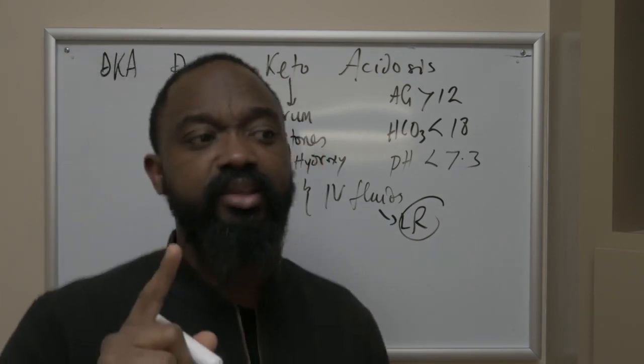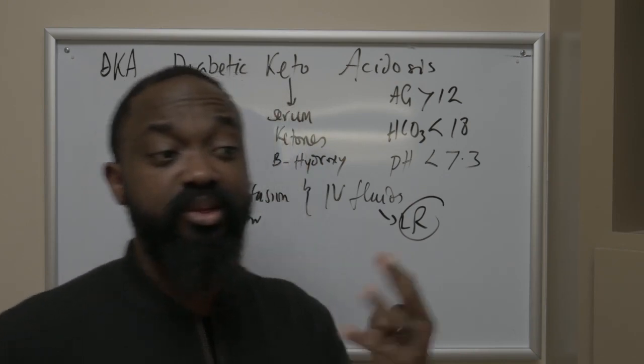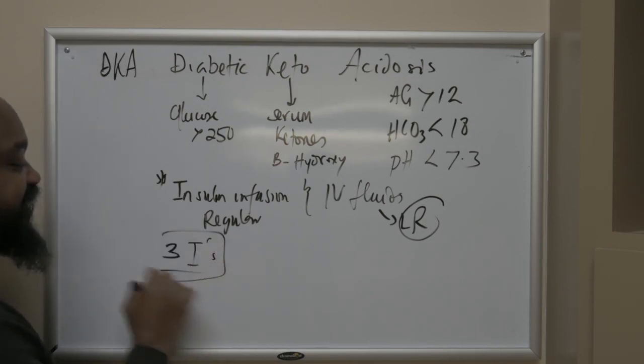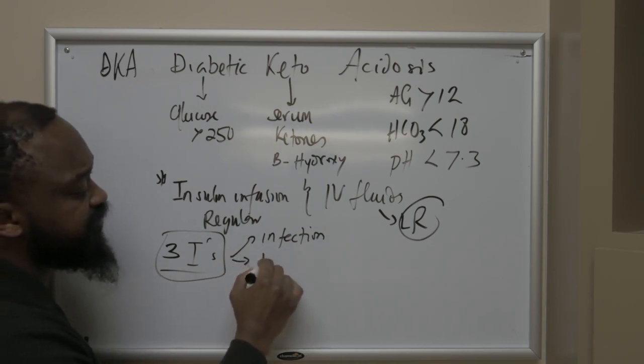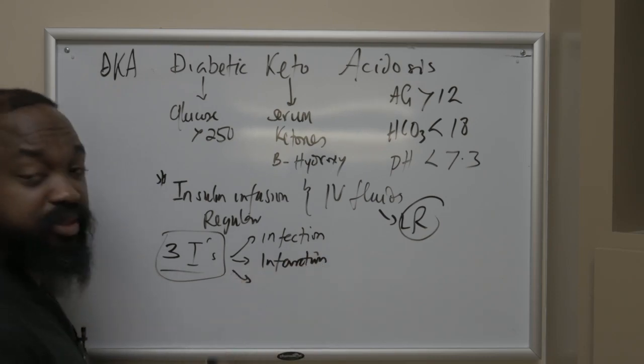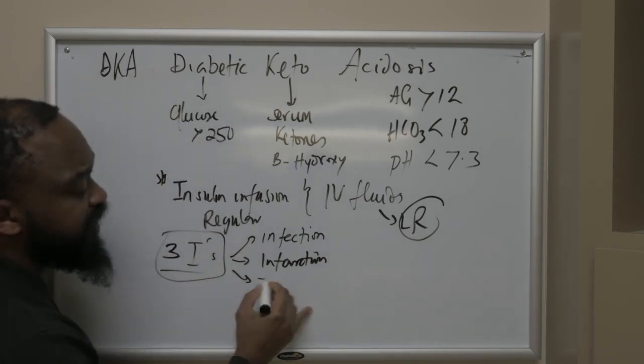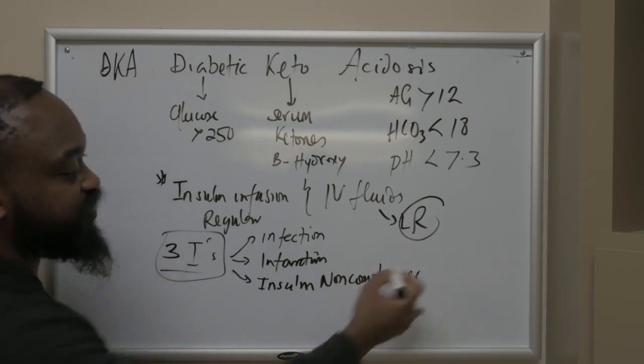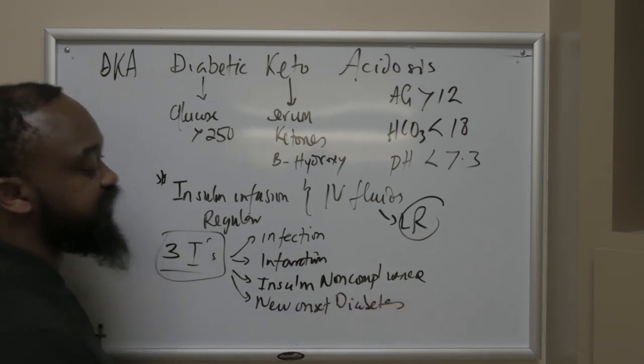But the very important thing with DKA is DKA doesn't just happen by itself. So you always have to track back and say, what caused the DKA? I would like to look at it in three ways. I must have heard this mnemonic sometime in the past, but I just stuck to it. So if you say three I's, for example, you can say infection as a cause of DKA, you can say infarction. And then you can say for a patient who's already had diabetes and were supposed to be on insulin and they're non-compliant with it, you can say insulin non-compliance. Another one that I tend to add with my students recently is to throw in their new onset diabetes, for example.